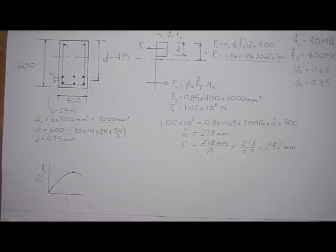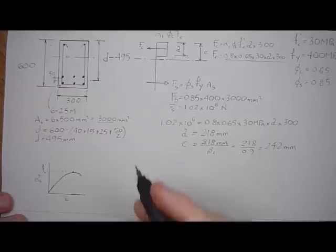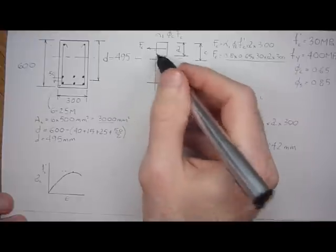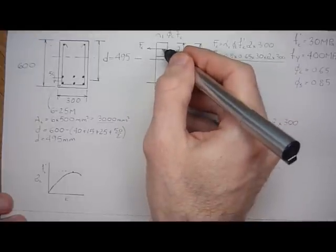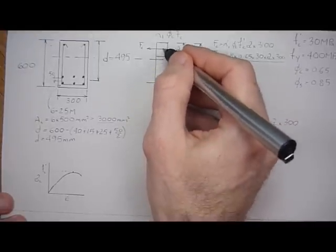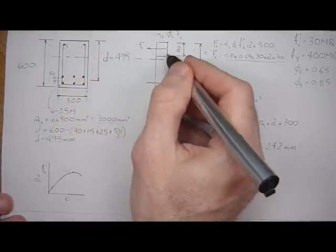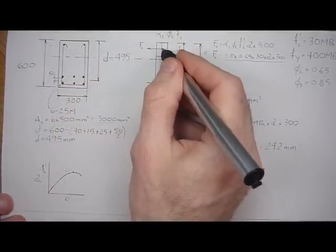So now that we have that, we can calculate what the moment resistance of the section is. And all we do is we take the force, either the force in the concrete or the steel, they're both the same. And then times this lever arm, this distance from here to here, which is really this distance from the center of the steel to the top, minus A over 2. And this is A over 2 here.